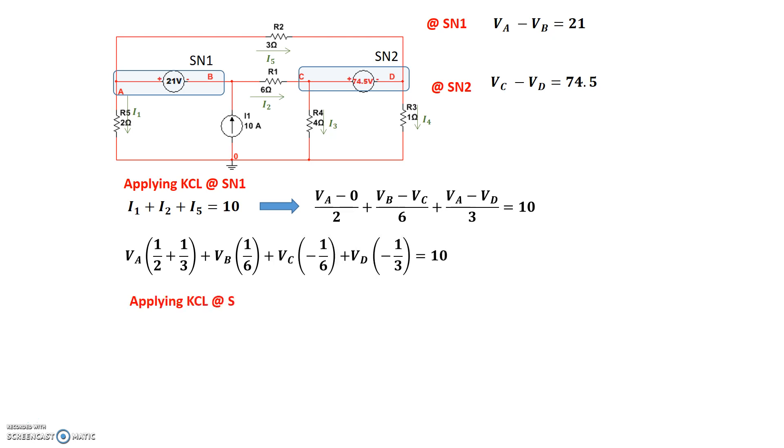Alright, now let's apply Kirchhoff's current law at supernode 2. Same way, Kirchhoff's current law at supernode 2 says the current going into supernode 2 is I2 and I5. So, I2 plus I5 should be equal to I3 plus I4. I2 is VB minus VC. I3 is VC minus 0 divided by 4. I4 is VD minus 0 divided by 1 ohm, and I5 is VA minus VD divided by 3 ohms. So, we have this right here.